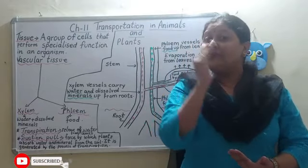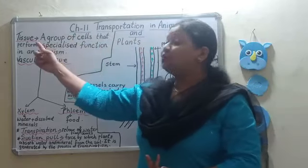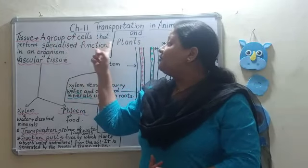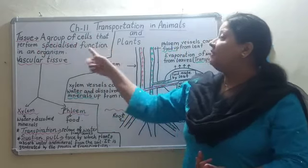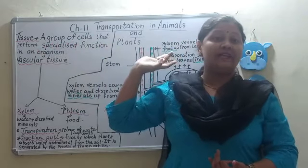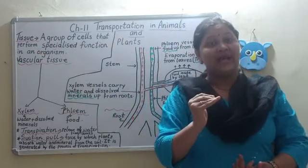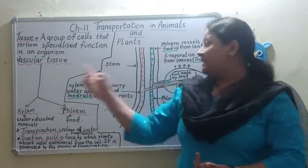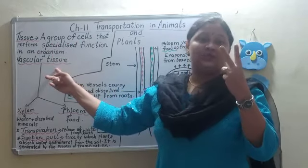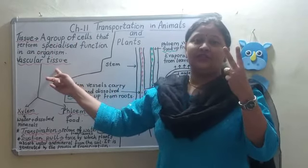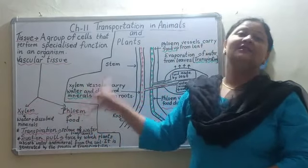Before coming to the topic, first I will tell you about the tissue and what these are. A tissue is a group of cells that perform a specialized function in an organism. The tissue responsible in plants for the transportation process is vascular tissue. There are two types of vascular tissue in plants: the xylem and the phloem.